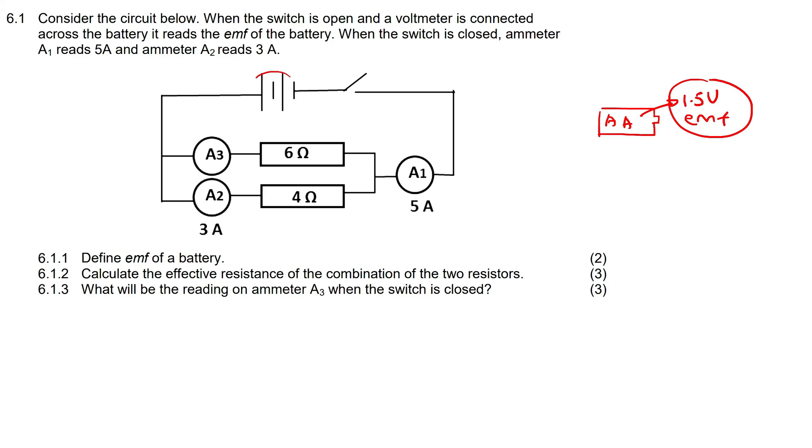If you plug it into your circuit over here and the switch is open, that means no current is flowing, then the battery should be reading 1.5 volts. So the voltage should be the EMF. When the switch is closed, ammeter A1 is 5 amps and ammeter A2 is 3 amps. So the first question: define EMF of a battery.